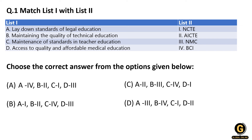Here, function D is 'find access to quality and affordable medical education.' This is done by the Medical Council of India, which was renamed and converted to the National Medical Commission. So the correct pair is D–3. You can see that only options A and B have D–3. Next, function C is 'maintenance of standard in teacher education.'